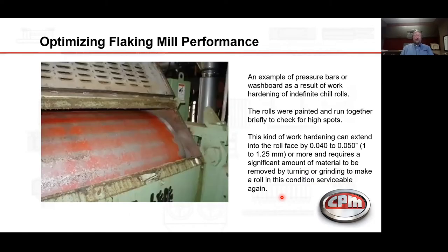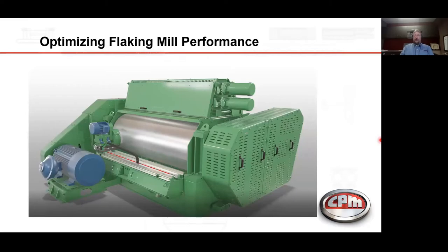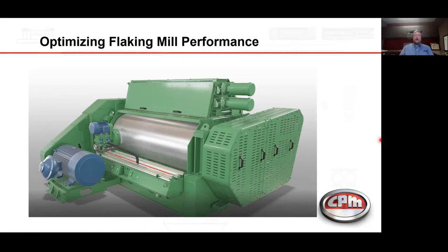Here's another example — we told the customer to paint a stripe across the roll. They painted the whole roll, which gives a good visual. They touched it together, and any place the paint is rubbed off has a high spot and needs to be ground. You can tell this roll has severe washboarding. This illustrates our roll surface grinder mounted to the rear of the flaking mill, which can be used to grind the ends of the rolls or full face. A slow-down drive is available to slow the rolls to approximately 30 RPM, which aids in more rapid stock removal for damaged rolls.